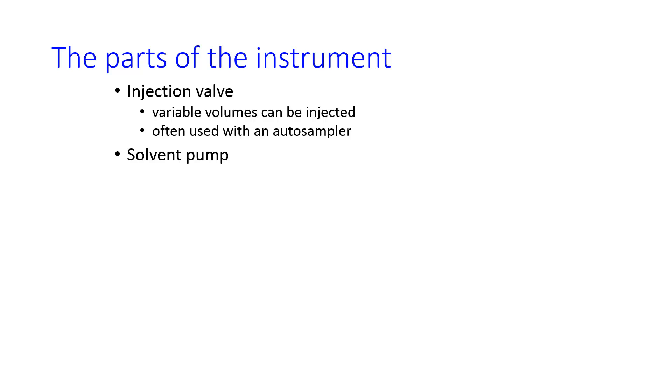The solvents are pumped into the injection valve and then onto the column by a solvent pump. The characteristics of this are mainly that it has a steady, high-pressure, reproducible flow. You can use multiple pumps, or you can use one pump with multiple valves for gradient elution, which I'll talk about later.